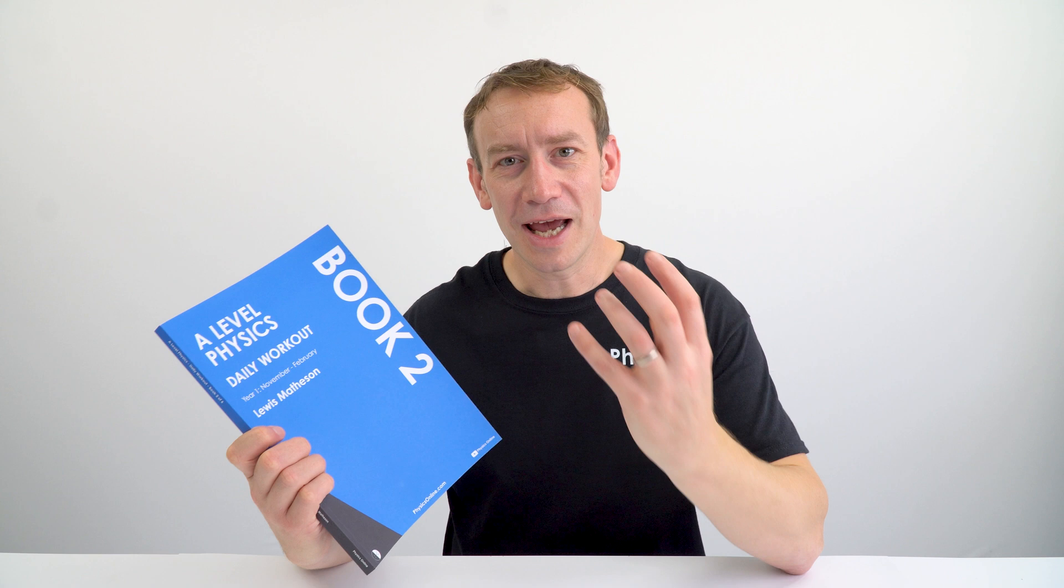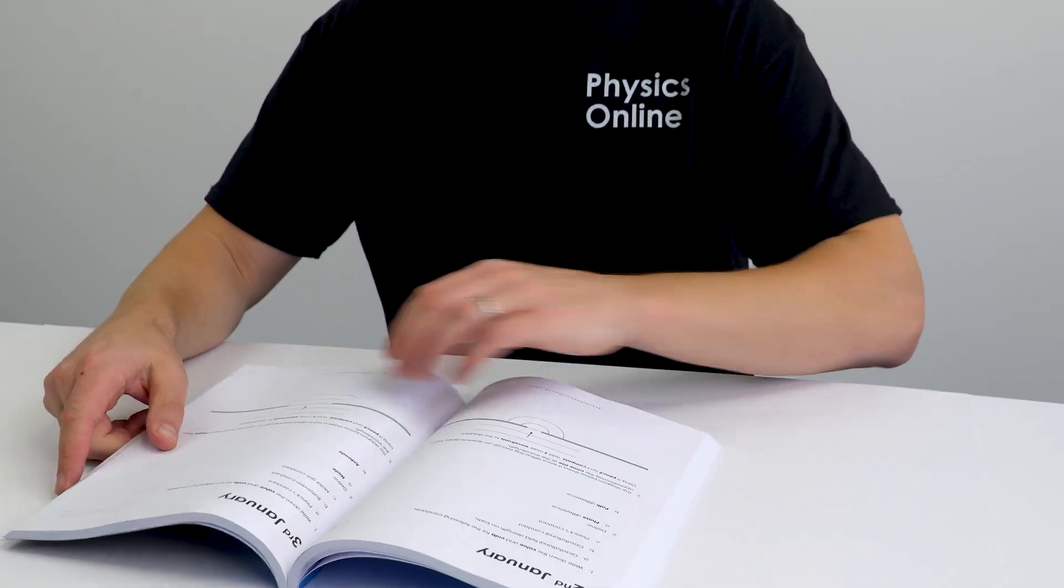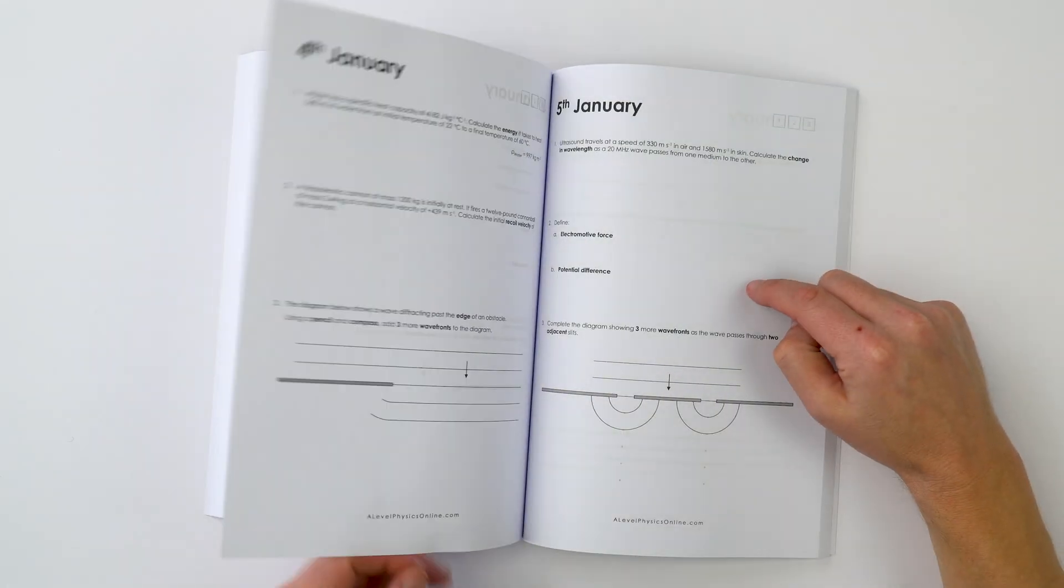This book is unlike any other A-level physics book that I've seen before. The first way it's unique is the fact that every single day there are different questions for you to have a go at and it's linked to a date. And this means that when you sit down to do some work, you know that within five minutes or so you'll have completed that task and therefore it's not an endless thing that just seems like a daunting amount of work.